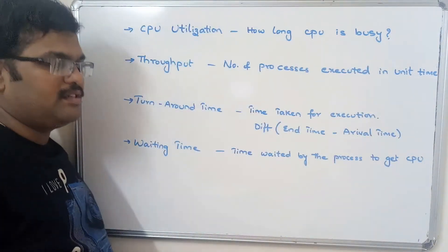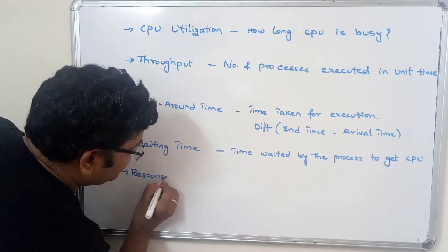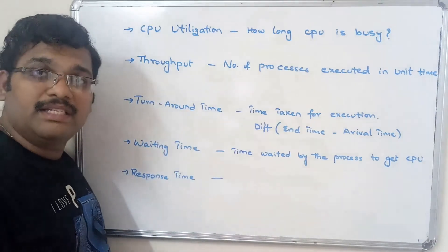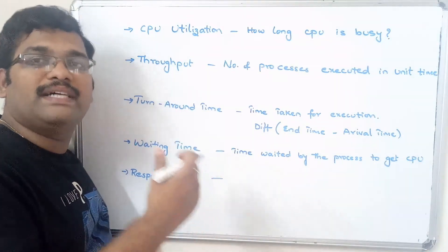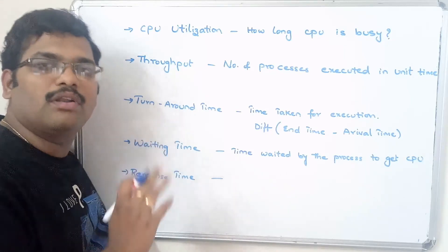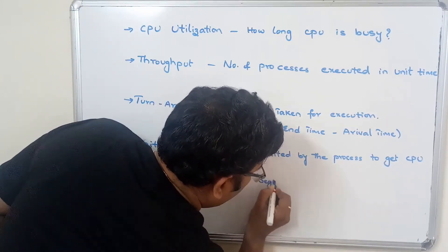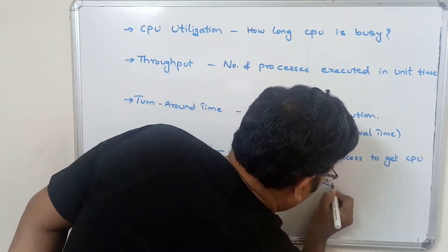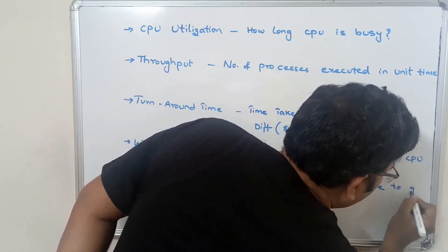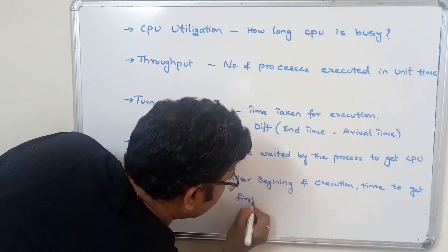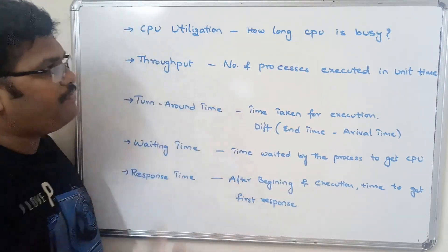Waiting time is the time waited by the process to get the CPU. The next criterion is response time. Response time is, after beginning of execution, the time taken to get the first response from the CPU — that is called the response time.